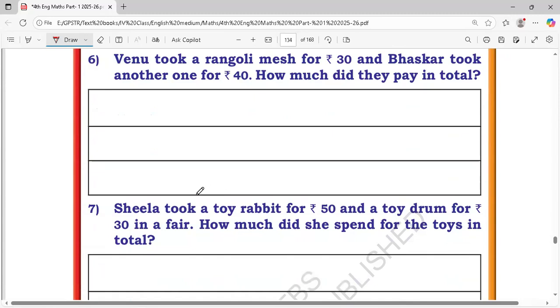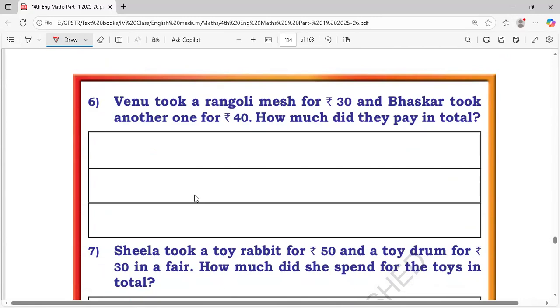6th one. Venu took a Rangoli mat for 30 rupees and Baskar took another one for 40 rupees. How much did they pay in total? That means one 30 rupees, another one 40 rupees. Total 70 rupees. Total amount is 70 rupees.